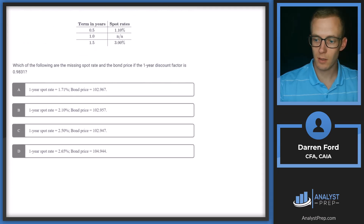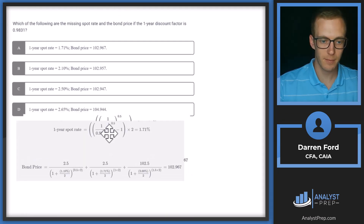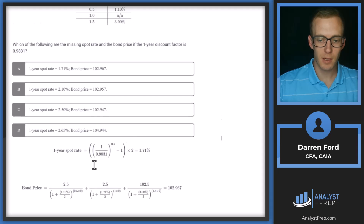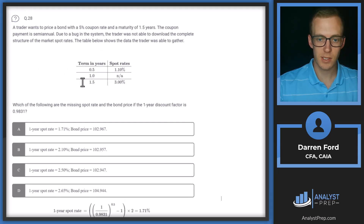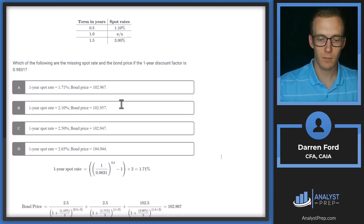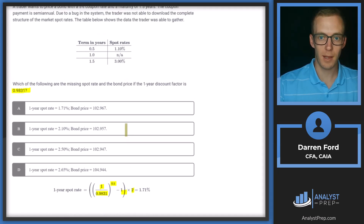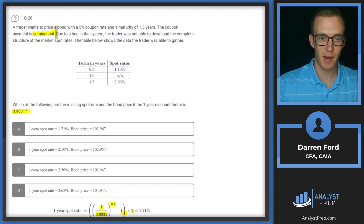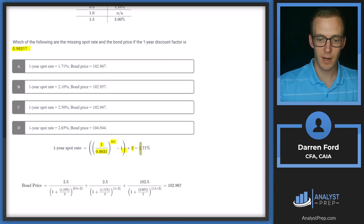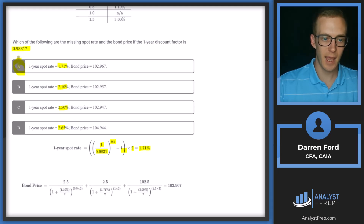The spot rate formula is: (1 / discount factor) raised to the 0.5, minus 1, multiplied by 2 — multiplying by 2 due to the semi-annual coupon payment. That gives us a 1-year spot rate of 1.71%. The answer choices are 1.71%, 2.1%, 2.5%, and 2.65%, so answer A looks correct. If pressed for time, we could click that and move on.